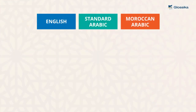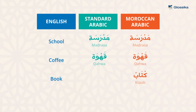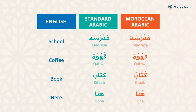The first type were the words that were almost exactly the same as the standard Arabic. For example: madrasa, madrasa. Kahwa, kahwa. Kitab, kitab. Hana, huna.